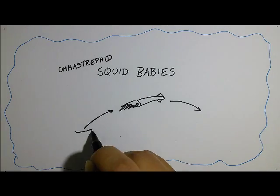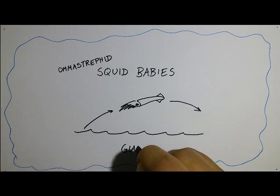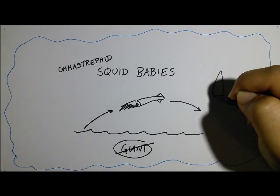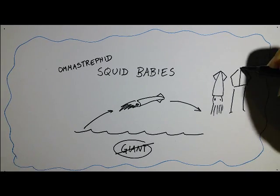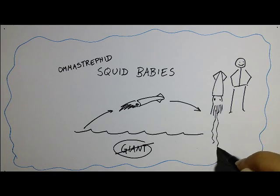Omastrophids are sometimes called flying squid because they can fly. They're big but not giant. Even the biggest omastrophid squid, the Humboldt squid, is usually smaller than a human. Unless you stretch out the tentacles, which is cheating.